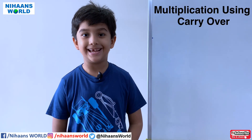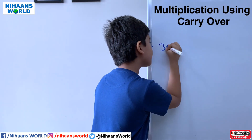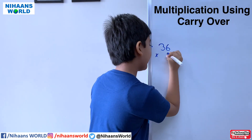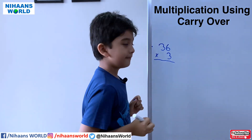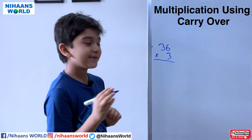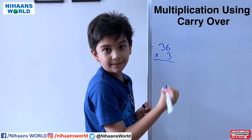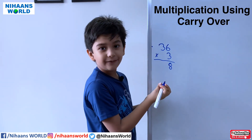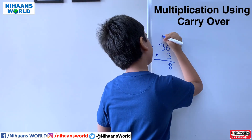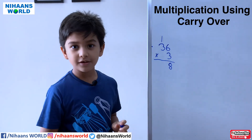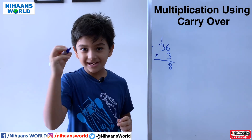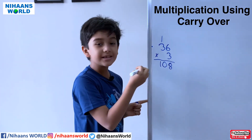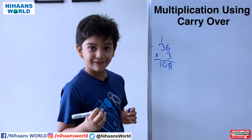Friends, let us see another example: 36 multiplied by 3. 6 multiplied by 3 is equal to 18. Write 8 here and 1 goes to the carry over position. Then 3 multiplied by 3 is equal to 9, and 9 plus 1 is equal to 10. So 36 multiplied by 3 is equal to 108.